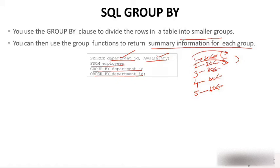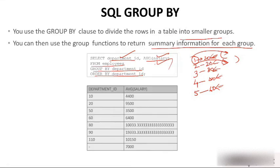I will use GROUP BY. I am selecting department_id and AVG(salary) FROM employees, and I am grouping it by department_id. What it will do is group all the employees of department 1, then find the average salary for that group. After grouping, it will find the average salary for each group. The answer we get is: department_id 10 has average salary 4400, department_id 20 has a certain average salary, 50 has its value, and so on.